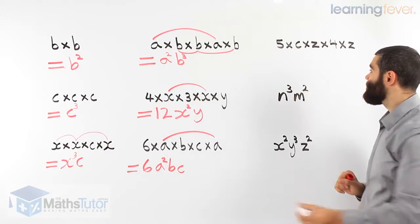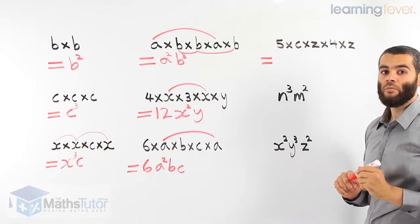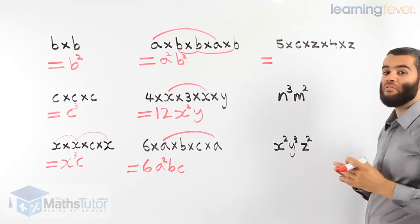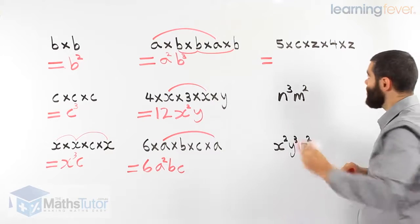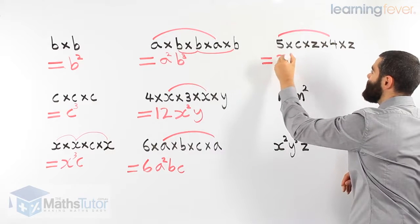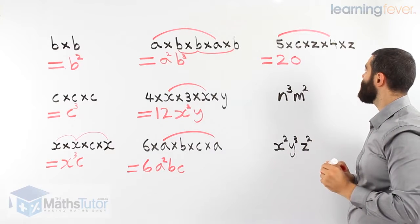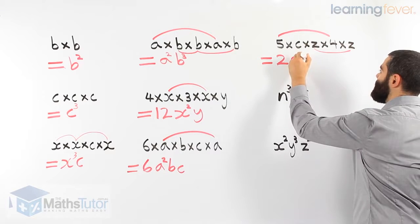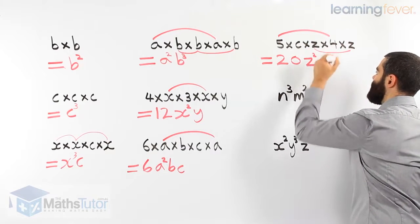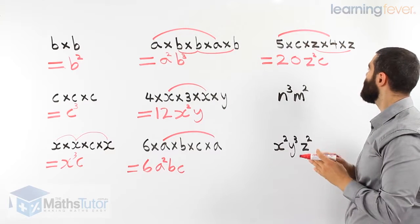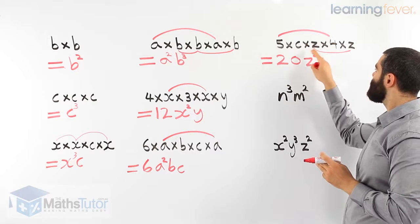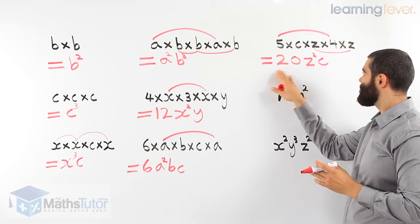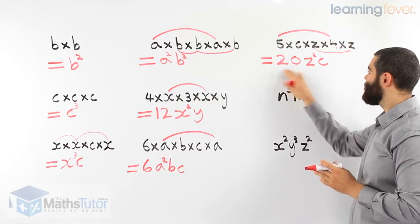Now see if you can do this one yourself — be quick. 5 times c times z times 4 times z. Do we have numerals? Yes, 5 times 4 is 20. Then we look for the pronumerals: c times z times z. We can do the z's — z squared — and then c. So 20z squared c. 5 times 4 is 20, c is already there, and z times z is z squared. Much simpler and shorter than writing it in this confusing way. This is called index notation.